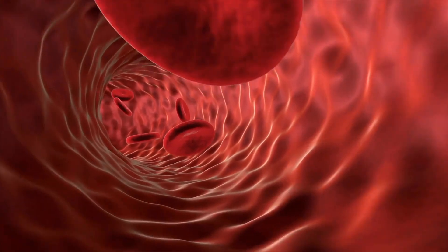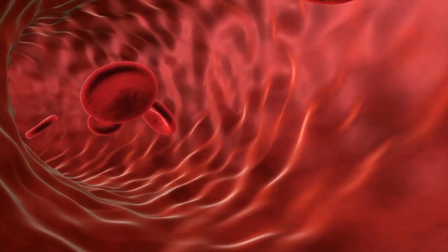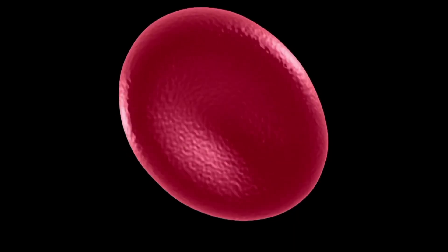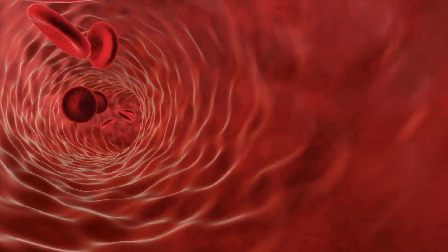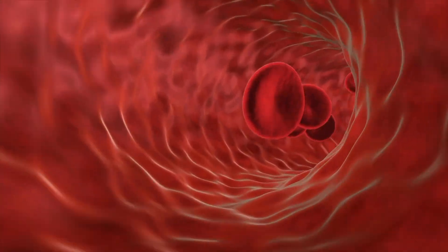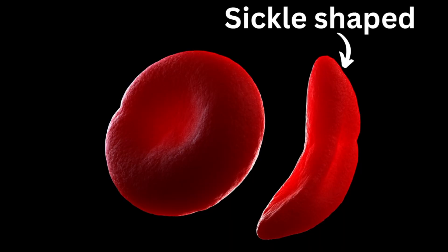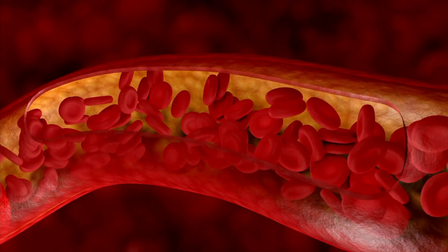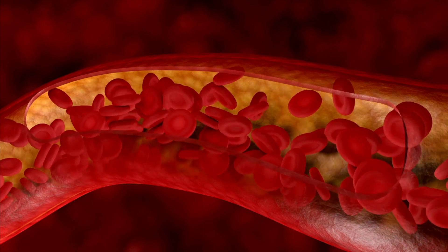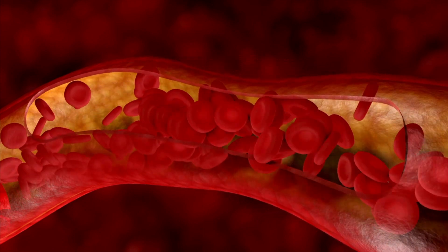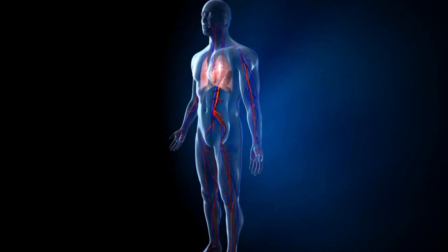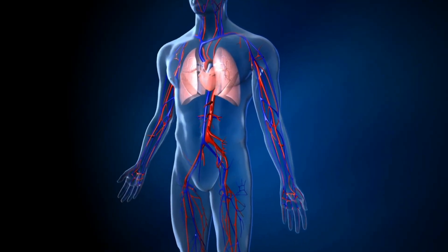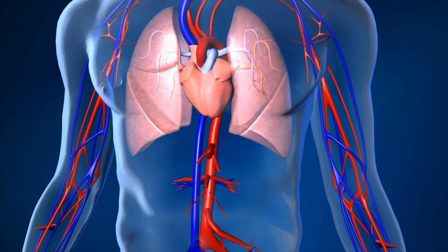Sickle cell affects the shape of red blood cells, which carry oxygen in our bodies. Normally these cells are round and smooth, allowing them to flow easily through blood vessels. But because of a genetic issue, they turn into a sickle or banana shape, making it harder for them to move through blood vessels and potentially blocking blood flow.